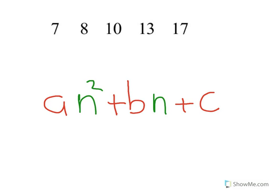This video is going to show you how to find the nth term of a quadratic sequence. A general quadratic sequence will look something like this. A, B, C are the numbers we need to find. N is the position of that number in the sequence — the term number.